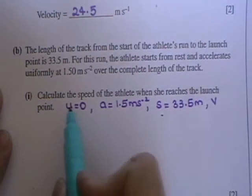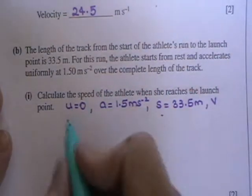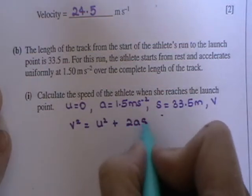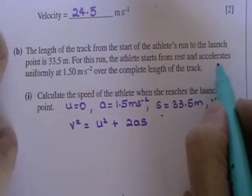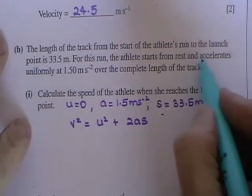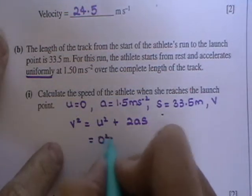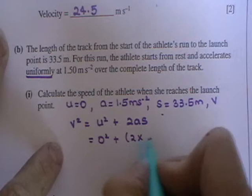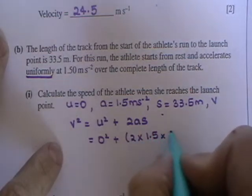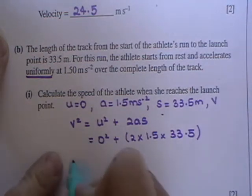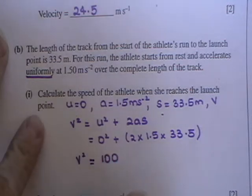You can see there U, A, S, and we need V. So you're going to use V squared equals U squared plus 2AS. This is obviously not a projectile question, but it says accelerates uniformly, and that means you're using your equations of motion. So that's equal to 0 squared plus 2 by 1.5 by 33.5 metres. V squared is 100, so V is equal to 10.